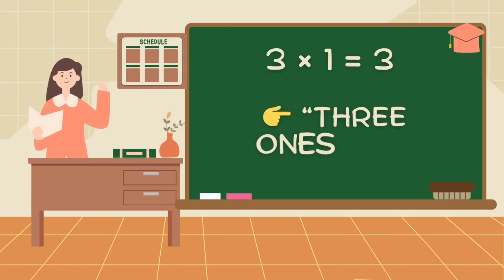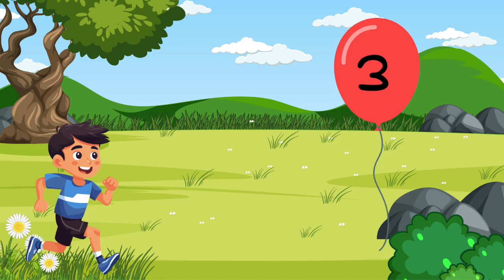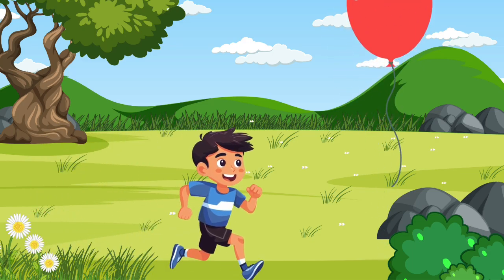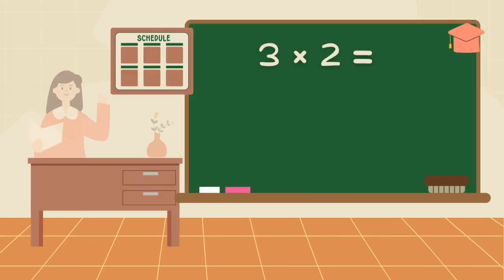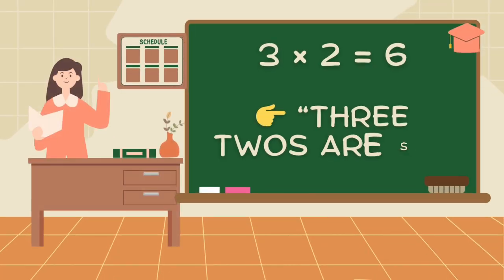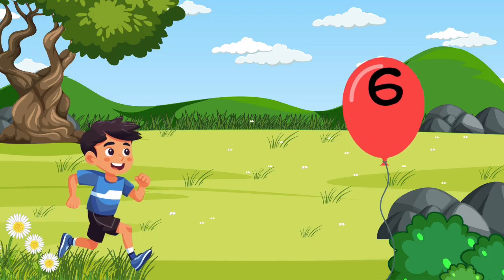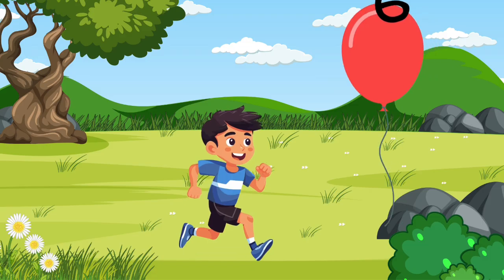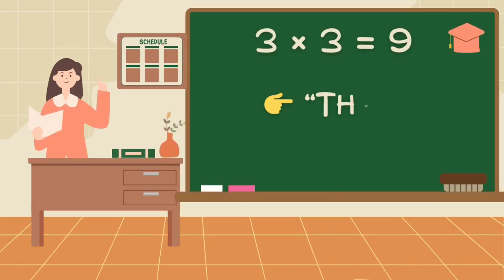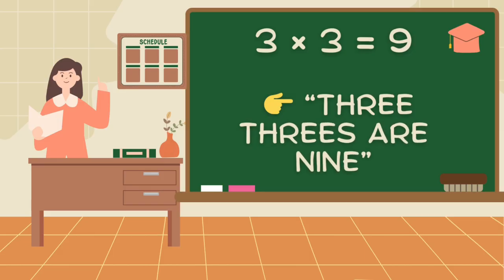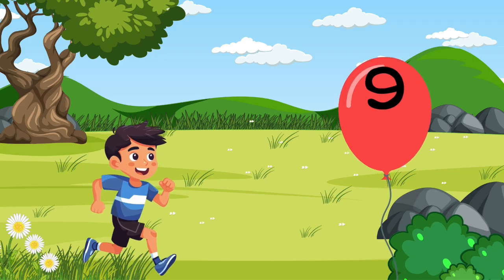Three ones are three. Three twos are six. Three threes are nine.